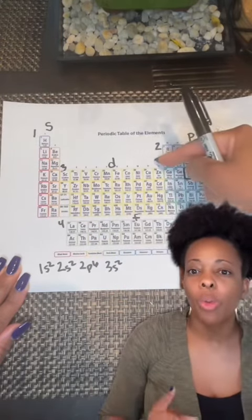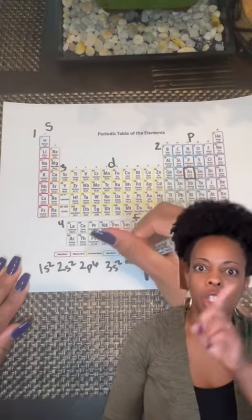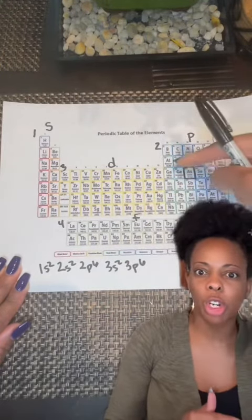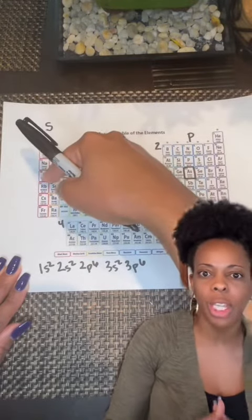Wrap back around. We then have our 3S2 that we have to account for. Jump over to the other side of the periodic table, and if we started at two, we now would write 3P6, to account for all of those in that group.